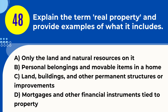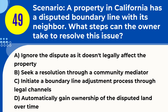Question 48. Explain the term real property and provide examples of what it includes. A. Only the land and natural resources on it. B. Personal belongings and movable items in a home. C. Land, buildings, and other permanent structures or improvements. D. Mortgages and other financial instruments tied to property. Answer: C. Explanation. Real property refers to land and anything permanently attached to it, including buildings, fences, and other structures. It also encompasses rights associated with the property, such as mineral rights or easements.